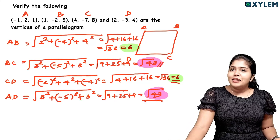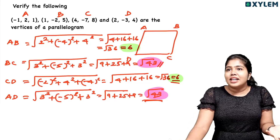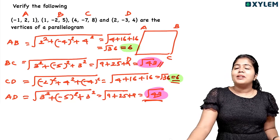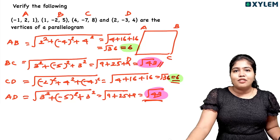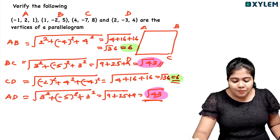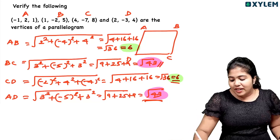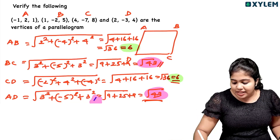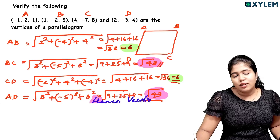Now the opposite sides of this parallelogram are equal. CD = root of 36 = 6, same as AB = 6. And BC = AD = root of 43. The important property of a parallelogram is that opposite sides are equal. Hence we can say that it is a parallelogram — hence verified.